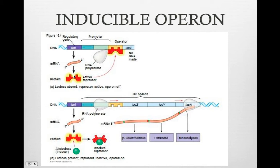For the lac operon, the inducer is allolactose. It is an isomer of lactose, which is formed from lactose. When lactose or allolactose is absent, the repressor is active and the genes are turned off. When lactose is present, allolactose binds to the repressor, causing it to change shape and fall off of the gene. This allows the gene to be transcribed or expressed.